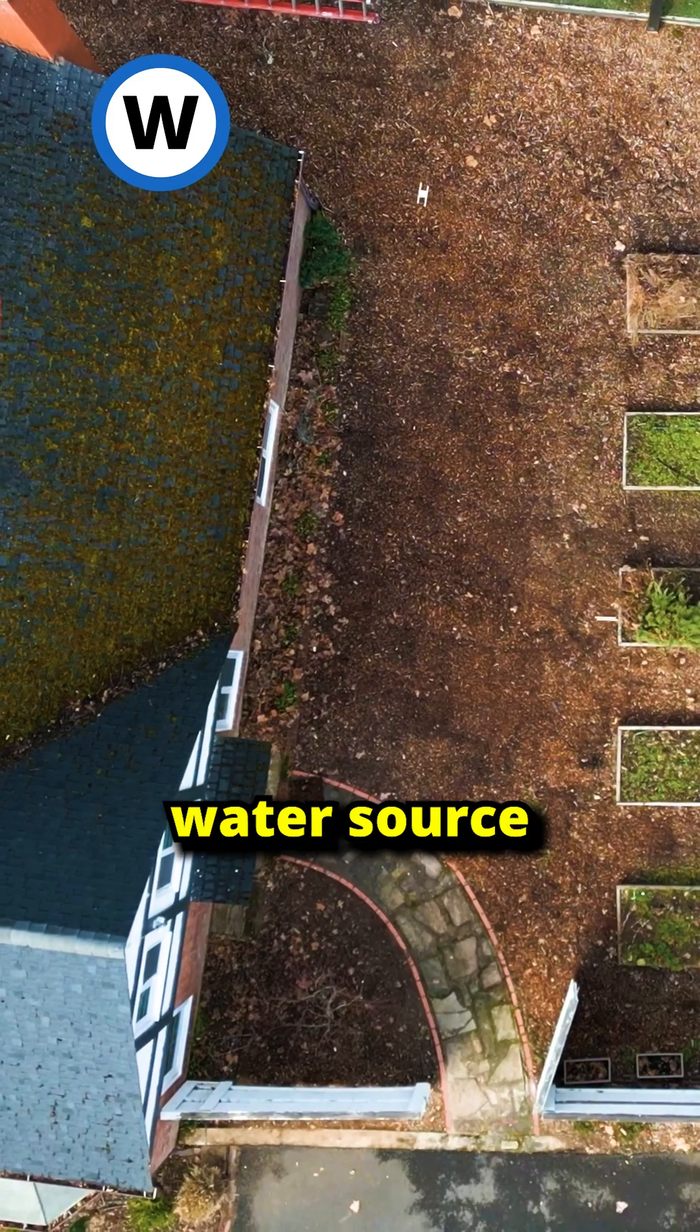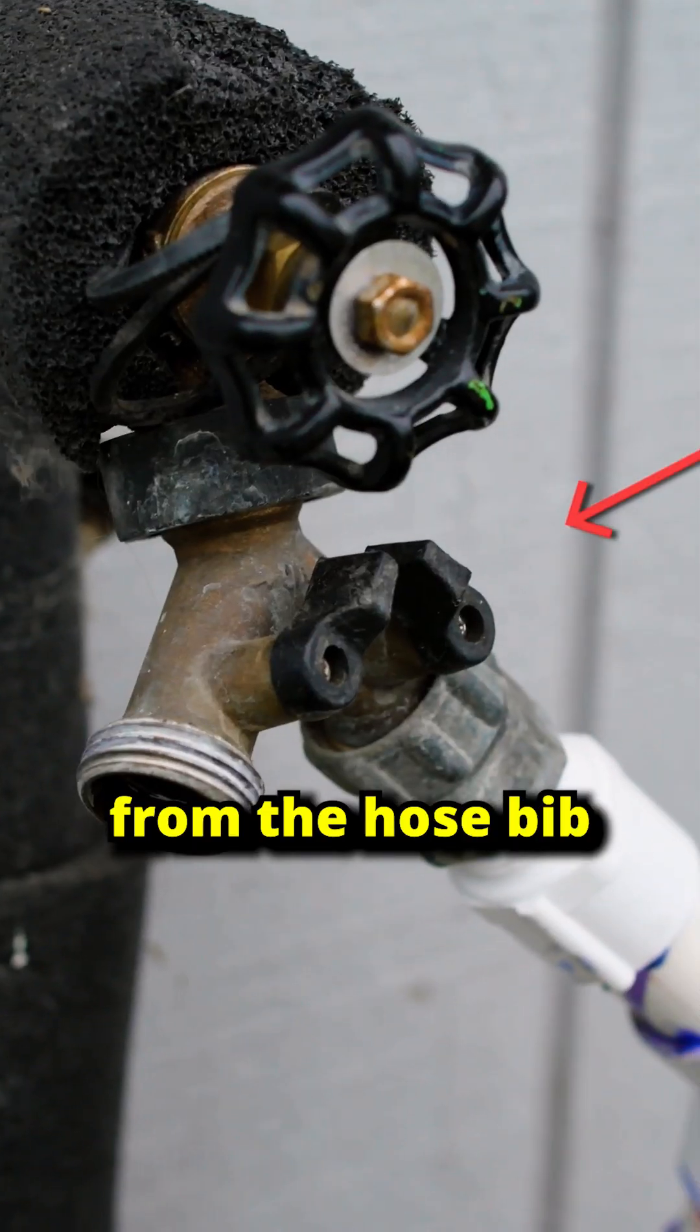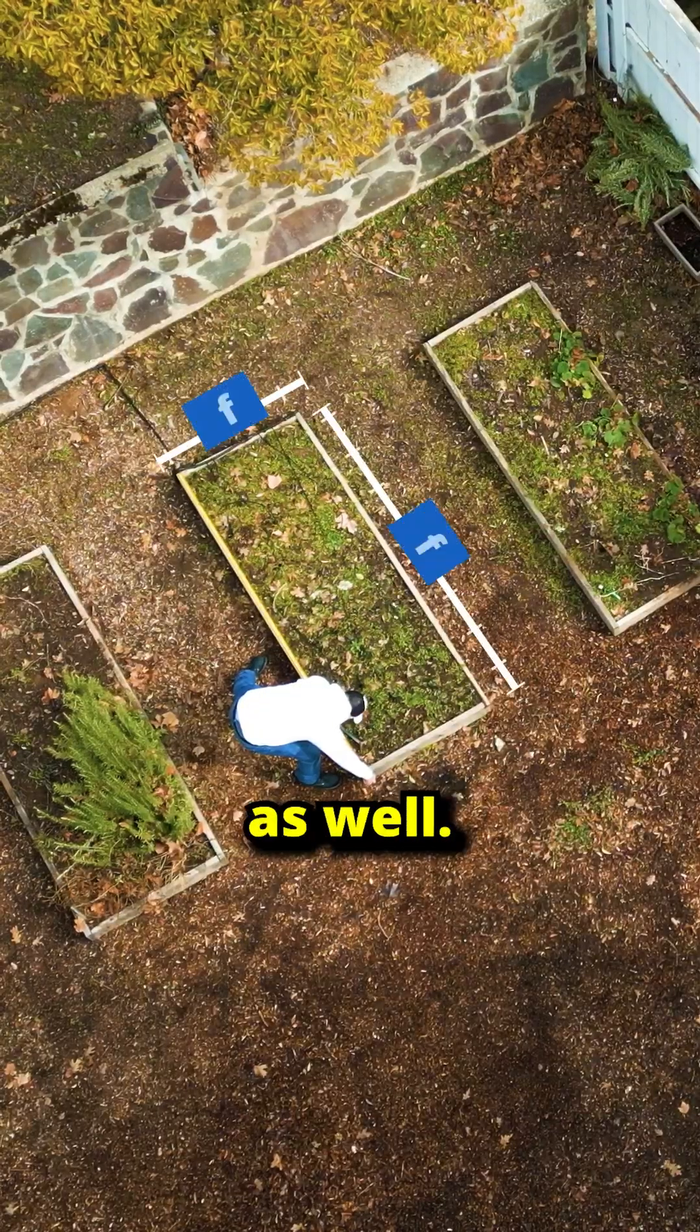What is your water source? And how far away is it from the furthest plant that needs to be watered? A home drip system will run from the hose bibs. If your garden includes raised or in-ground beds, go ahead and grab their length and width as well.